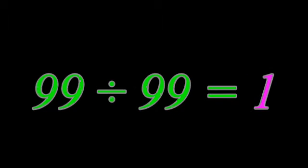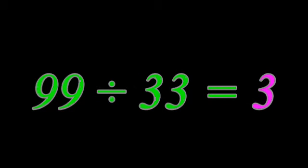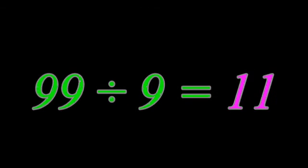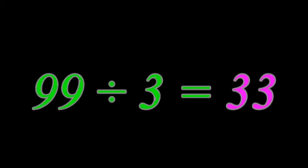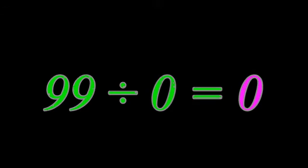99 divided by 99 equals 1. 99 divided by 33 equals 3. 99 divided by 11 equals 9. 99 divided by 9 equals 11. 99 divided by 3 equals 33. 99 divided by 1 equals 99. 99 divided by 0 equals 0.